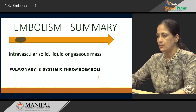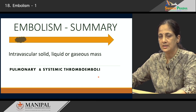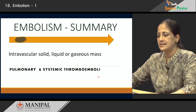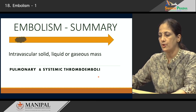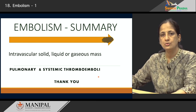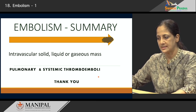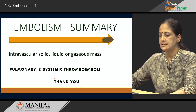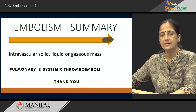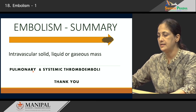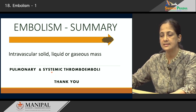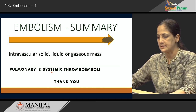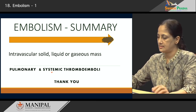In today's class we have gone through the features of embolism. We defined it as an intravascular solid, liquid, or gaseous mass which moves from its point of origin to a distal site where it occludes the blood vessel. If an embolus is derived from the venous side of the circulation and ends up in the pulmonary bed, it is called a pulmonary embolism. If it arises from the heart or the arteries, it results in a systemic thromboembolism. With this we end this class. Thank you.